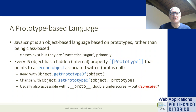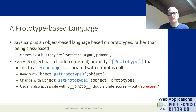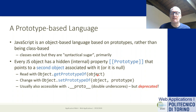Every JavaScript object has an internal property which is normally hidden, called the prototype — written with double square brackets, `[[prototype]]`. This is just an abstract representation. Every object through this property points to another object, so every object is linked to another object through the prototype property. To check which object it's linked to, you can use the static method `Object.getPrototypeOf()`.